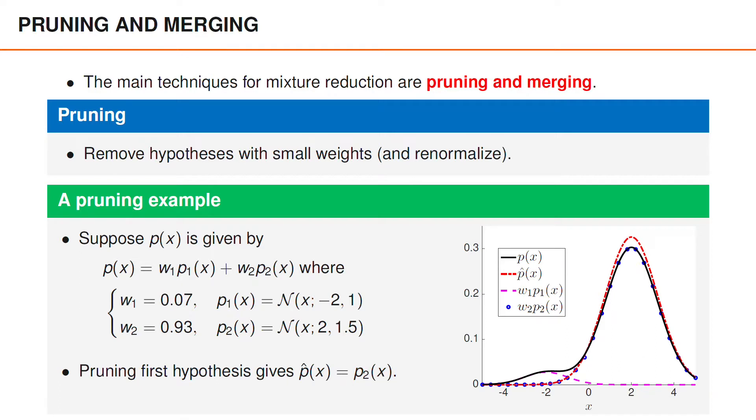As you can see, in this example, p hat is then this red point dashed curve, which approximates p of x reasonably well, even though it is much smaller than p of x in the region around x equal minus 2, where p1 of x has its peak.